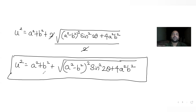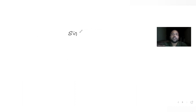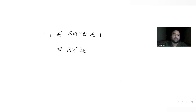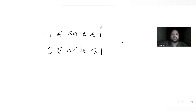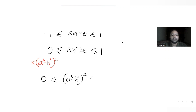Let's find the minimum and maximum values. I have only one trigonometric ratio here which is sine. I know sine of 2 theta lies between minus one and one. The square of that can never become negative, so the minimum value of sin square 2 theta is zero and the maximum value is one. So multiplying sin square 2 theta with (a square minus b square) whole square, we consider both bounds.